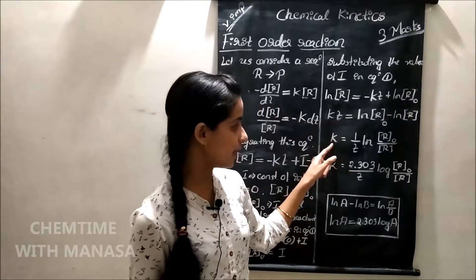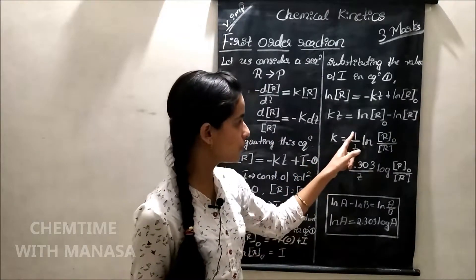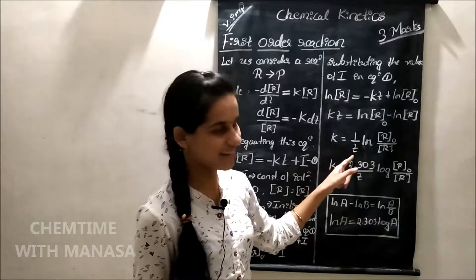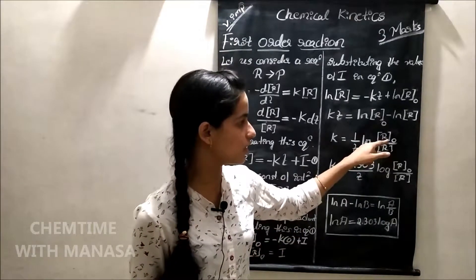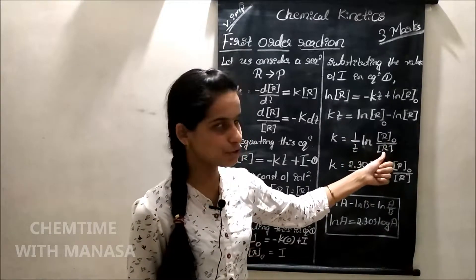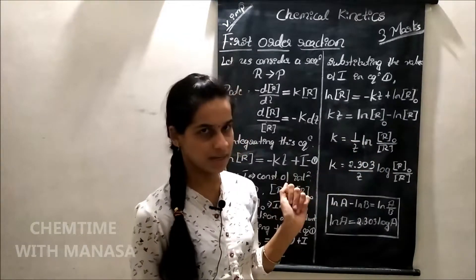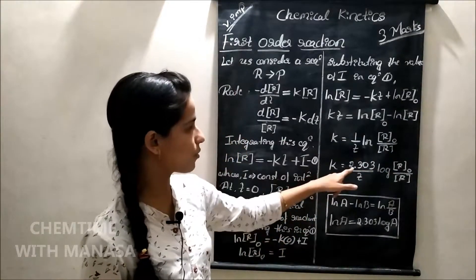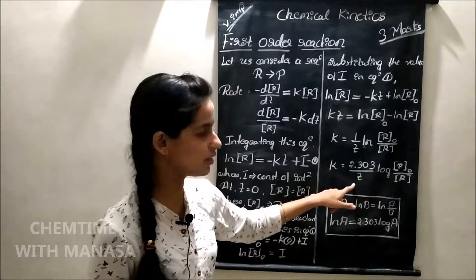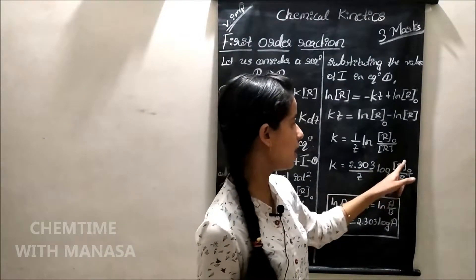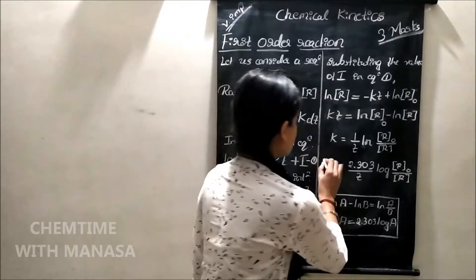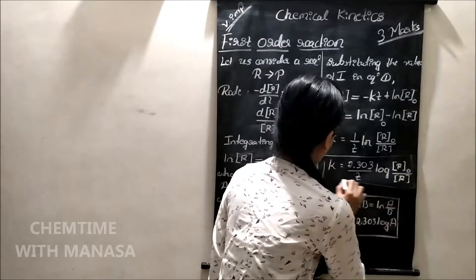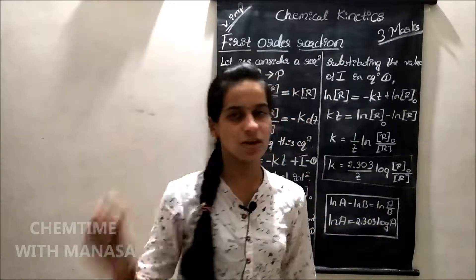That is, rate constant K is equal to 1 divided by time into ln initial concentration divided by concentration of the reactant at time T. Or, K is equal to 2.303 divided by T into log R naught by R. This is the expression for rate constant of the first order reaction.